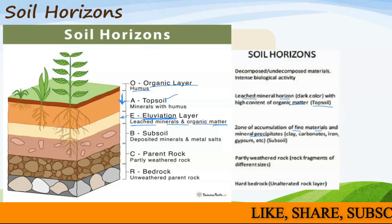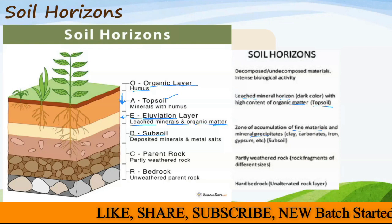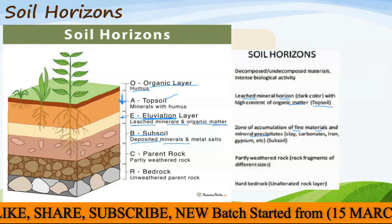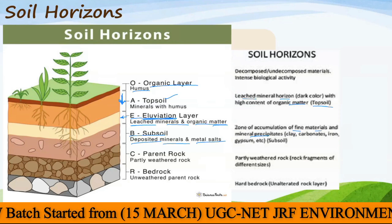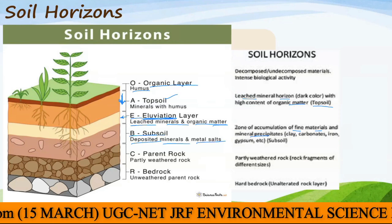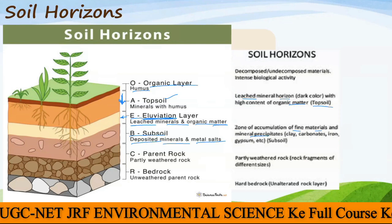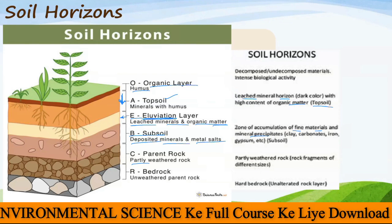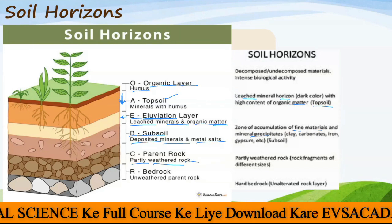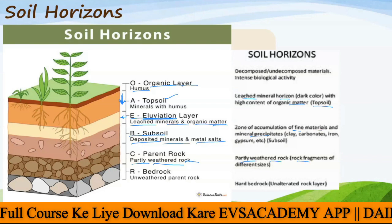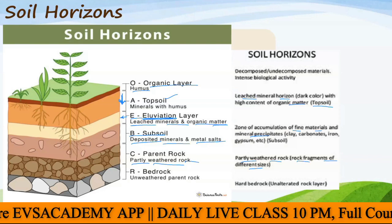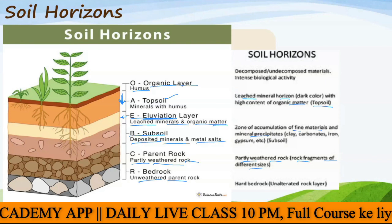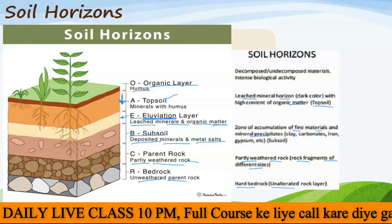Below the E layer, leaching continues into the B layer — the subsoil — where deposited minerals and mineral salts are found, also a zone of alluviation. Then comes the C layer, the parent rock zone, with partially weathered rock and rock fragments of different sizes. Finally, the R layer is the bedrock — unweathered, hard, unaltered parent rock.